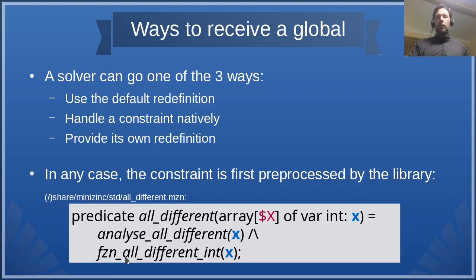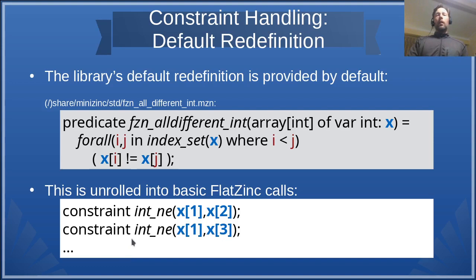For the first way, the default way, the library provides redefinition which is just a set of pairwise disequalities. And for the FlatZinc, this is unrolled into FlatZinc calls meaning disequality.